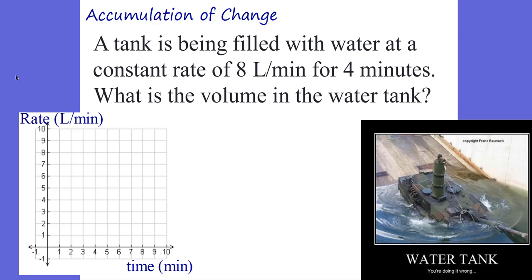Let's talk about what that means in a real-life situation. Here we have a tank being filled with water at a constant rate of 8 liters per minute for 4 minutes. What's the volume of water in the tank? This is pretty easy — you can probably answer this without the graph. We're filling at 8 liters per minute at every minute from zero to four. So 8 liters per minute times 4 minutes equals 32 liters.